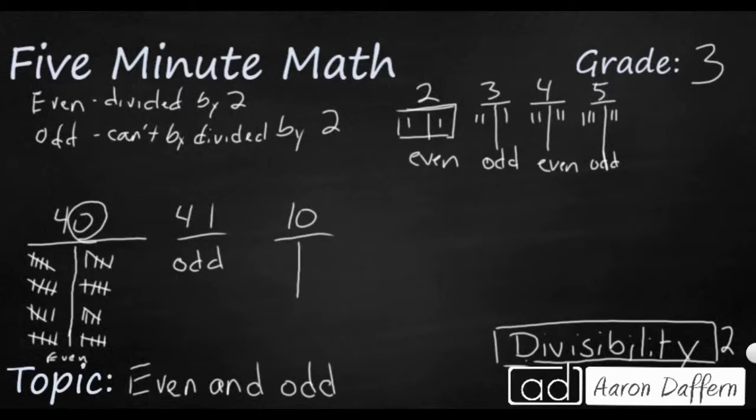One, two, three, four, five, six, seven, eight, nine, ten. That's even. If your ones place is a zero, then you are going to be even. So even is going to have ones place of zero.